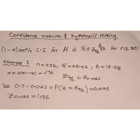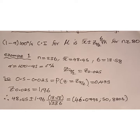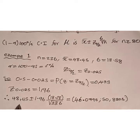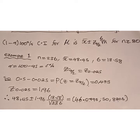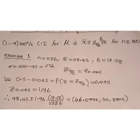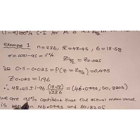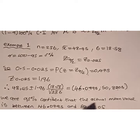Now I can calculate the confidence interval since I have my critical value. My confidence interval for the mean will be between 46.0795 and 50.8205. So I will conclude by saying we are 95% confident that the actual mean value is between 46.0795 and 50.8205.